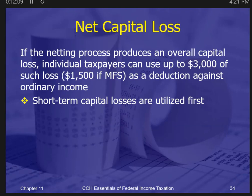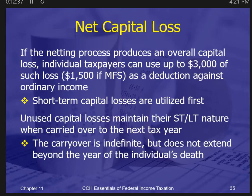Capital losses: if everything nets together and you end up with a capital loss, you can only deduct $3,000 — or $1,500 if married filing separately — against ordinary income. That's the downside of capital assets. You always use your short-term capital losses first. Capital losses maintain their nature — either short-term or long-term — when carried forward to next year. They don't go away; they carry over as long as you're alive. If you have a large capital loss, you may have to use it up $3,000 at a time over many years.